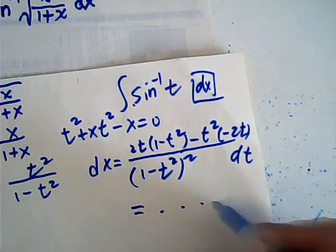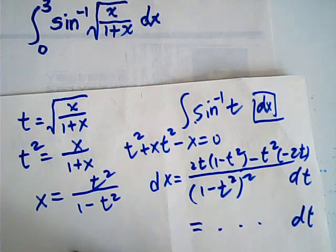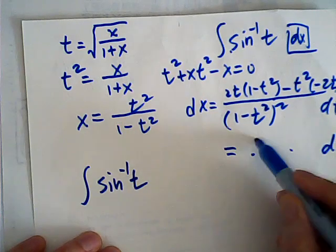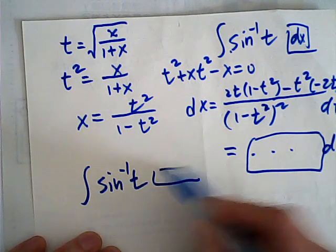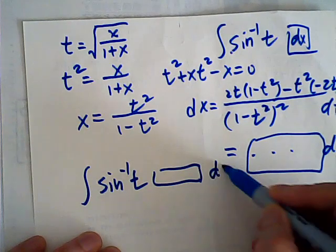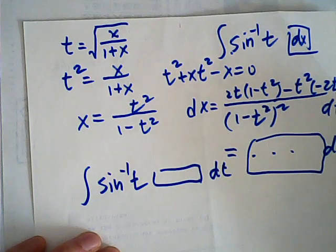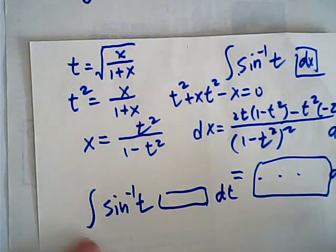Well, then it simplifies, right? Then the integral becomes arc sine t and this whole expression put here, times dt. Let me see. Well, this of course doesn't look nice.